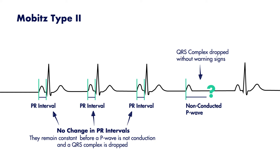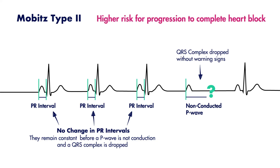In this case, QRS complexes are simply not conducted, or dropped. As a result, Mobitz type 2 has a higher risk of progression to complete heart block than type 1, and usually when this is seen on an EKG, this would be an indication for a pacemaker, even if the person is asymptomatic.